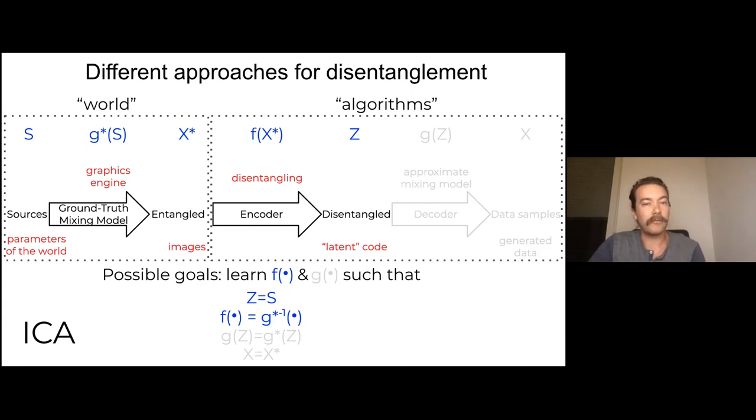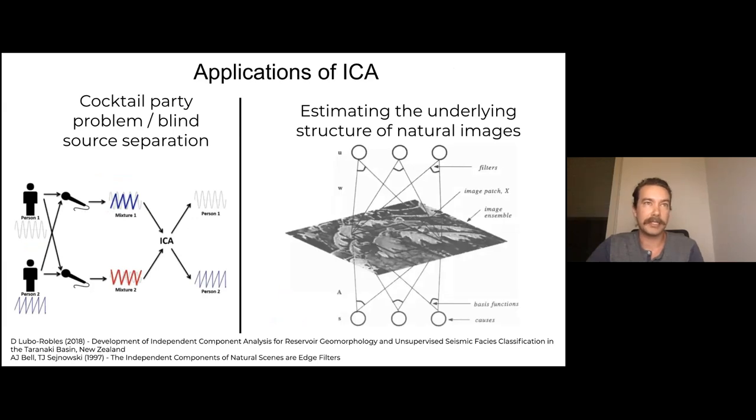However, some downsides are one, we don't know, we don't have a good way of verifying that we've preserved all the information. So we don't really have a good way of checking that Z has all the information in X, whereas if we were regenerating data samples, then we would know for sure. And we also don't have a good way of generating new data, which has a lot of its own interesting applications.